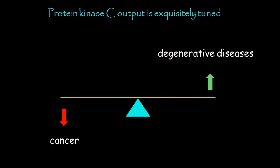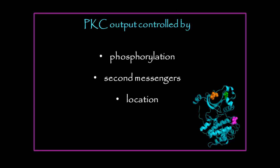So the output of protein kinase C is controlled by phosphorylation, which is constitutive — it is required to make a catalytically competent protein kinase C and required for the stability of the enzyme. It is also acutely regulated by second messengers, which are the on-off switches for catalytic activity. And lastly, it's controlled by location, which positions protein kinase C near its substrates.